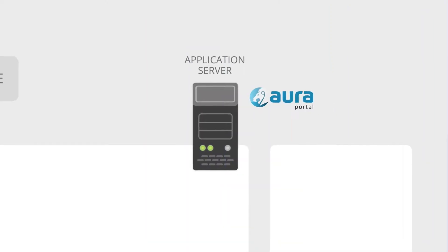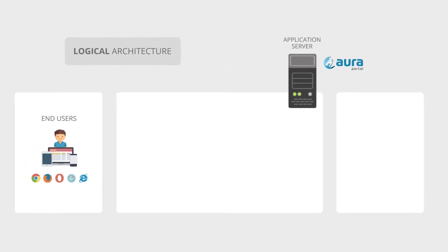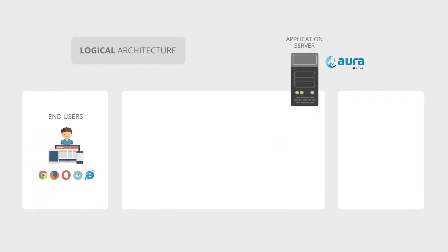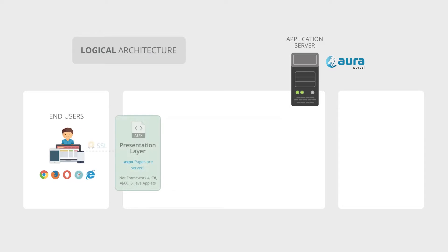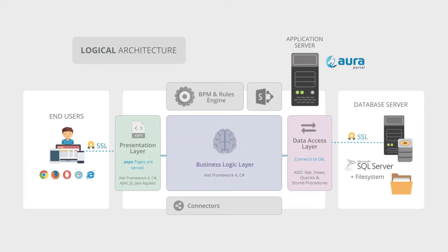Oroportal architecture is designed with cutting-edge technology structured into three layers: presentation layer, business logic layer, and data access layer. Its layered design allows all kinds of scenarios, from the simplest concentrated on one individual server, to easily scalable distributions over multiple servers to support the most demanding workloads.